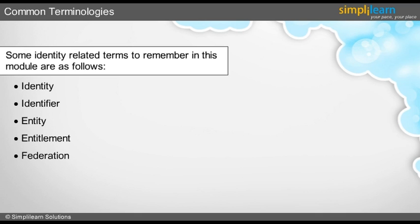Federation is the term used for the connection between two identity repositories. The term persona is identity plus attributes that provide context to the environment the entity is operating within. Attributes are facets of an identity.